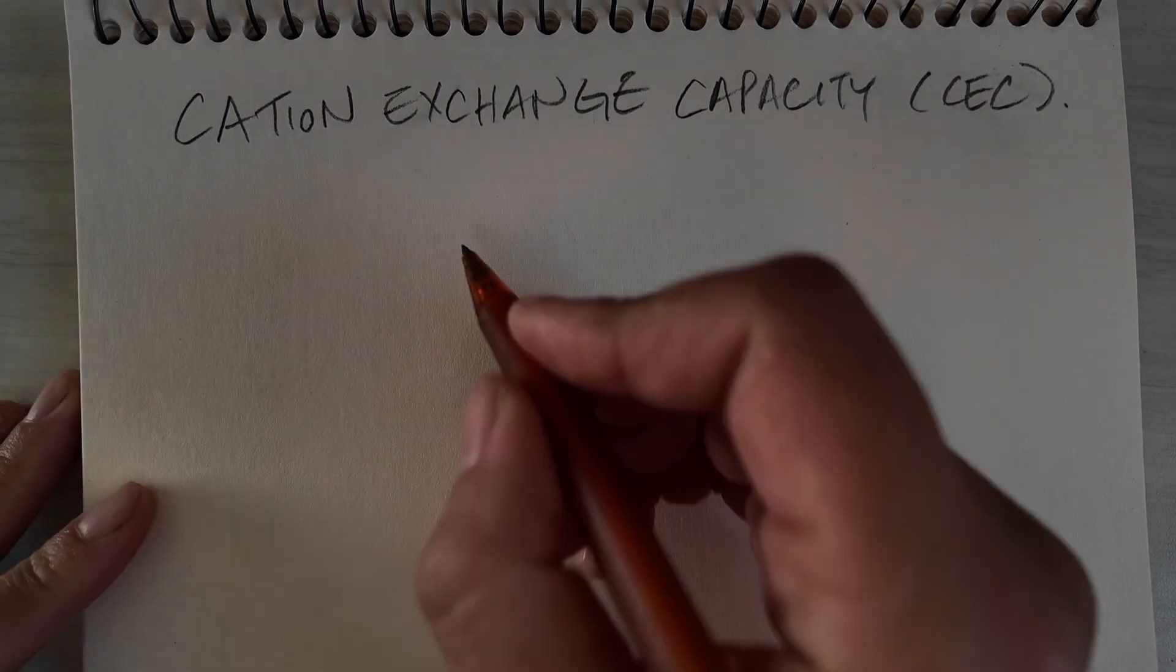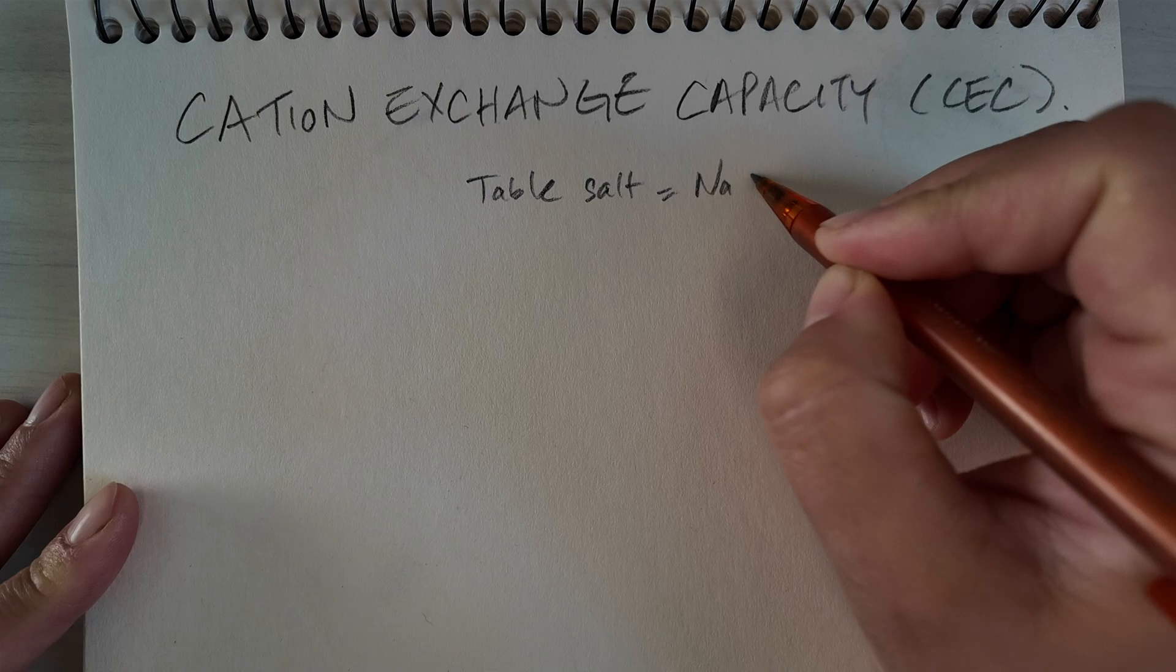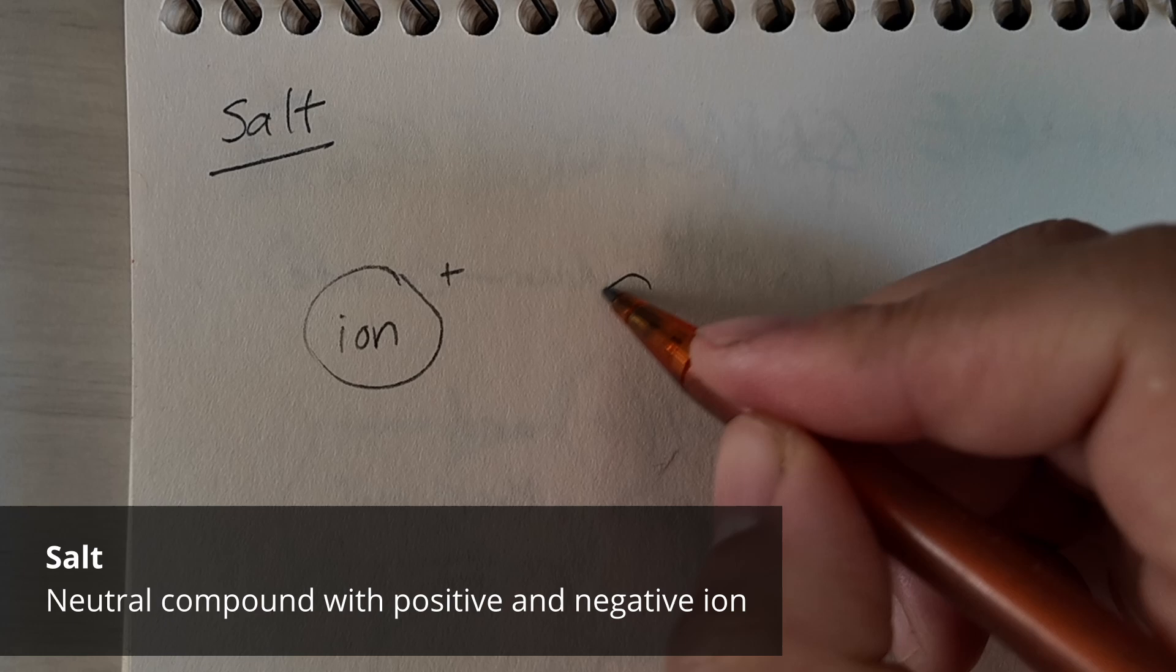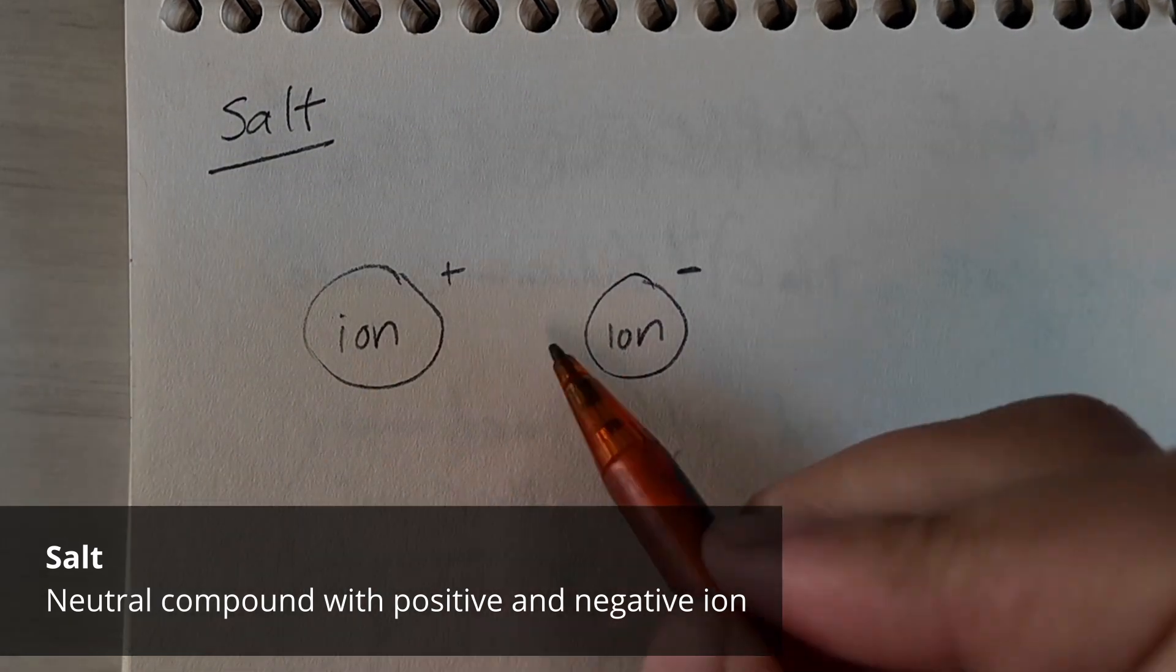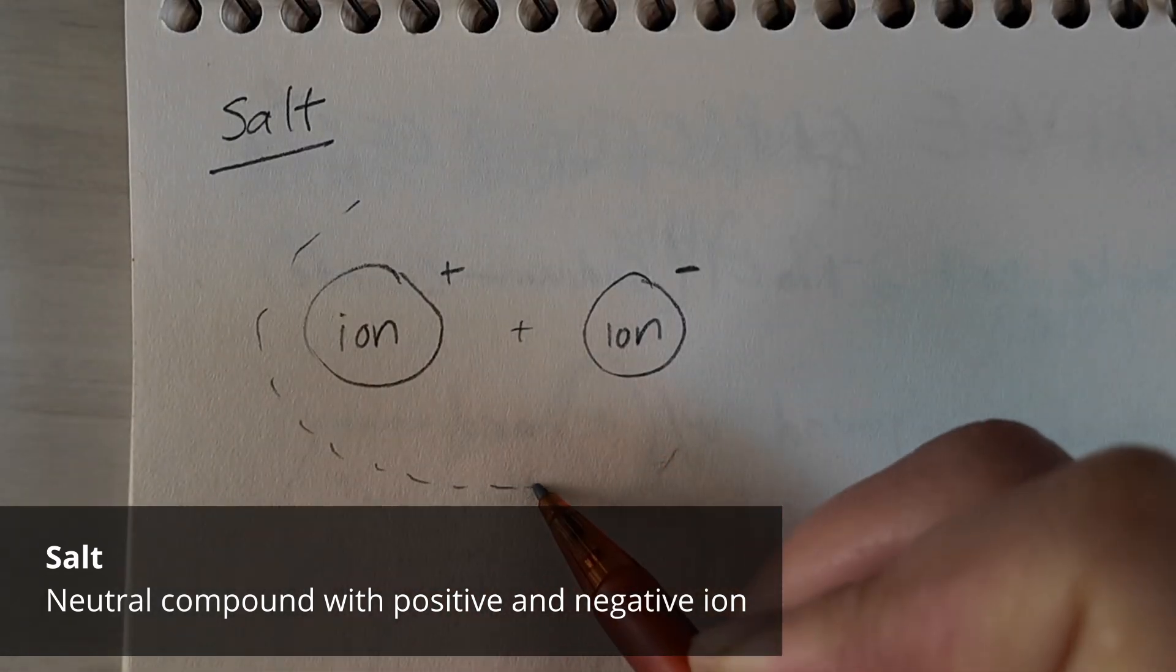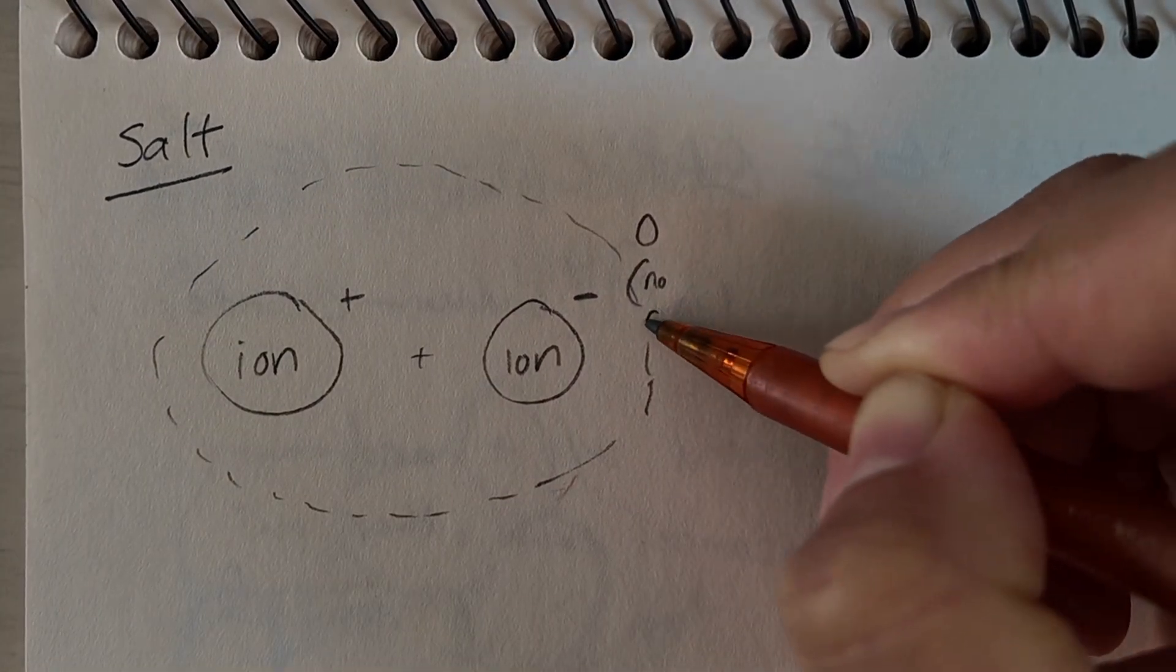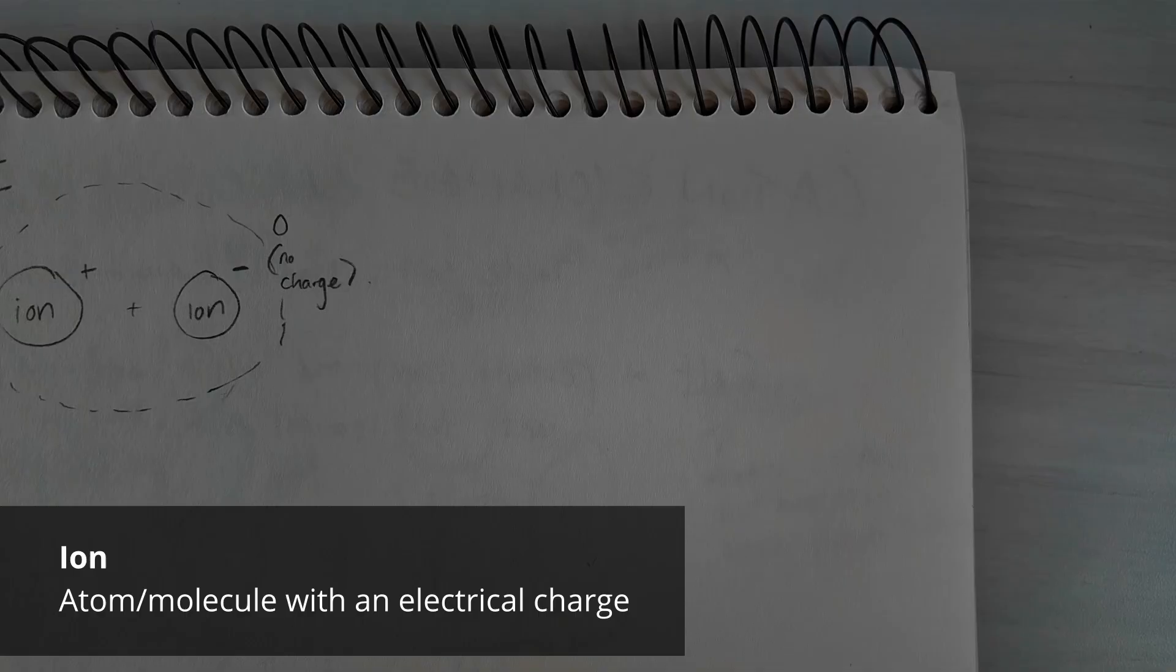You may know salt as something like table salt, which is sodium chloride, but the definition of a salt in chemistry is more general. It's a neutral compound that consists of a positively charged ion and a negatively charged ion, and those positive and negative charges cancel each other out. What is an ion?